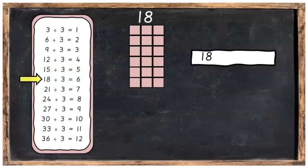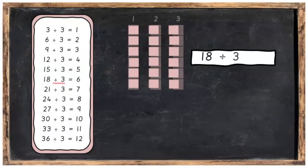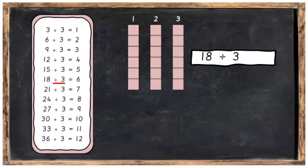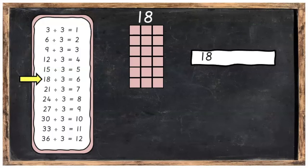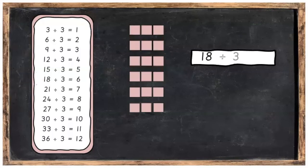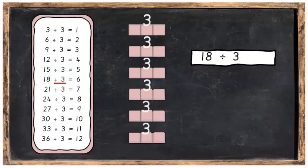18 divided into 3 equal parts, you're going to get 6 in each part. But if you get 18 and divide it into 3's, you're going to have 6 groups of 3.